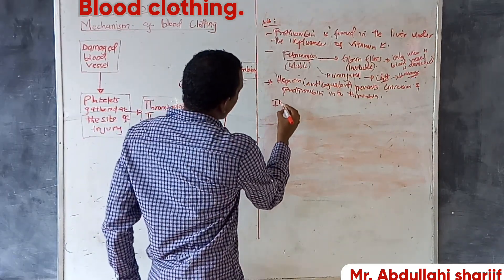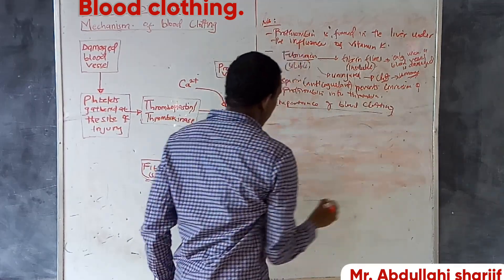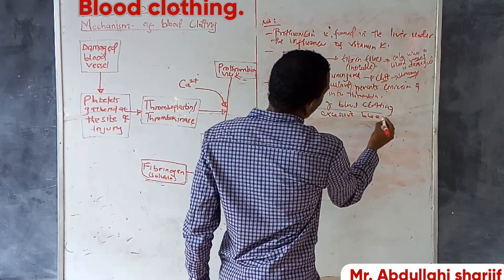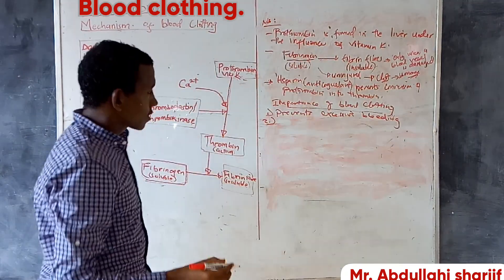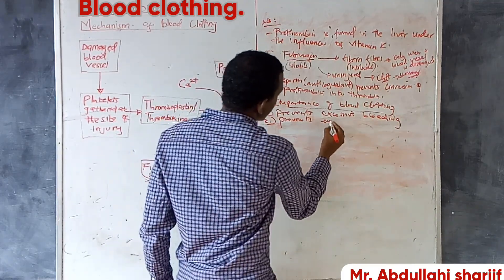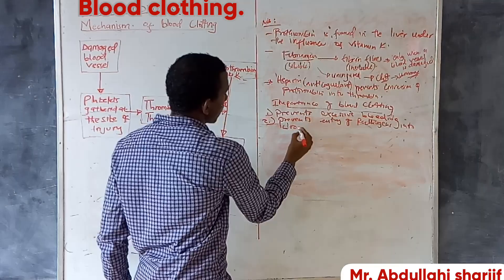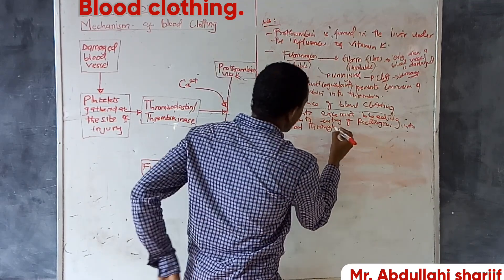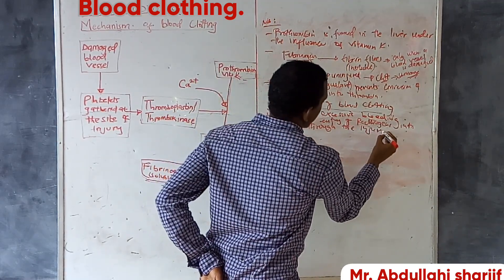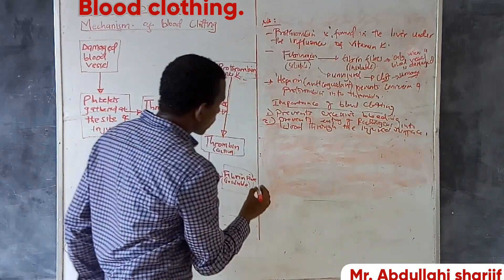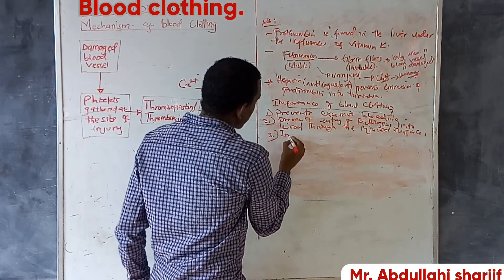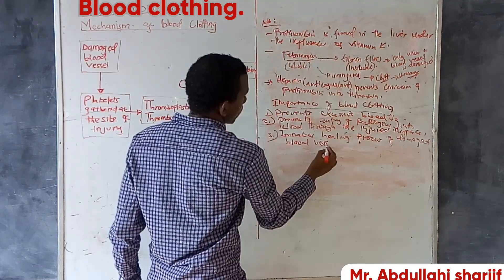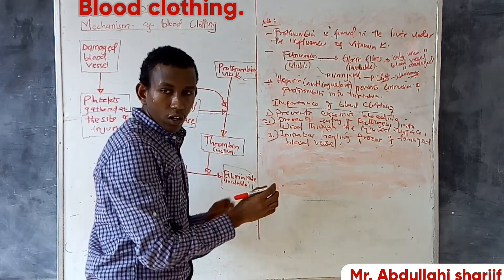What are the importances of blood clotting? First, blood clotting prevents excessive bleeding. Another importance is that it prevents the entry of pathogens into the blood, because the formation of a scab prevents pathogens from entering the injured surface. Lastly, blood clotting is important in the tissue healing process of damaged blood vessels.